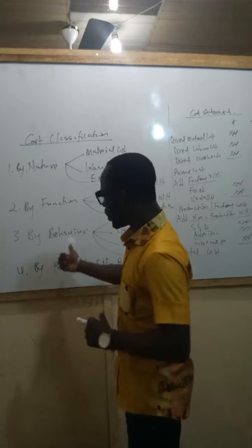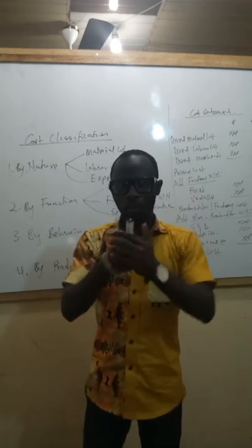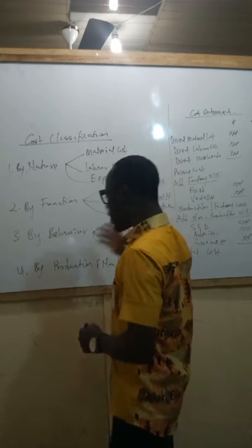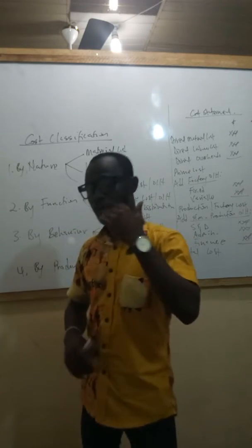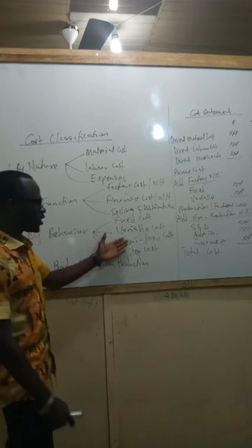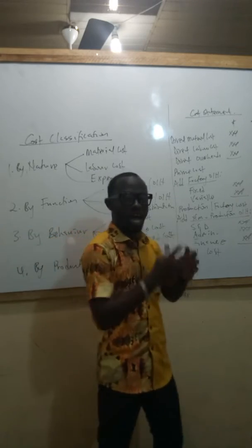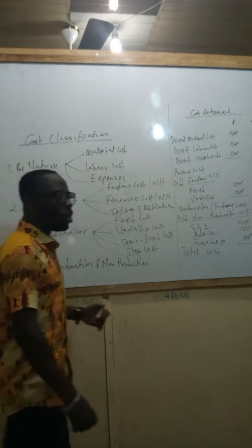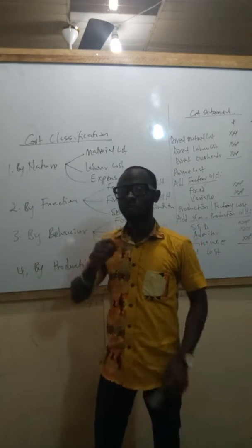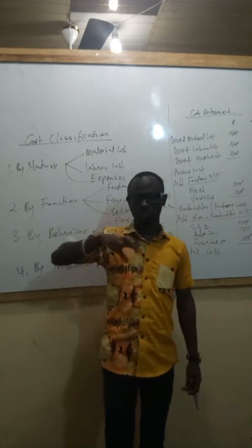In the last video, we came to classification of cost according to behavior - where we classify cost according to how the cost varies with output level. We spoke about fixed cost, that it remains the same irrespective of the output level. We spoke about variable cost, that it changes with the output level - the more you produce, the more variable cost you incur. Then we spoke about semi-fixed and semi-variable cost, which have a fixed component and a variable component. We ended on step cost, which is a fixed cost within a certain level of activity, after which it becomes a variable cost.